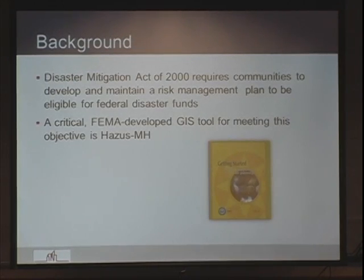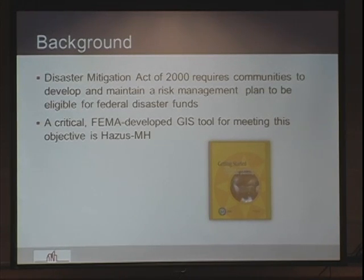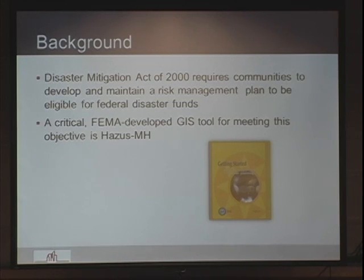This act requires every county in the United States to develop and maintain a multi-hazard mitigation plan. The plan needs to have a risk assessment and mitigation strategies. They also developed a GIS tool called Hazus MH to help communities do this. Has anybody heard of Hazus? We'll talk about that in a little more detail.